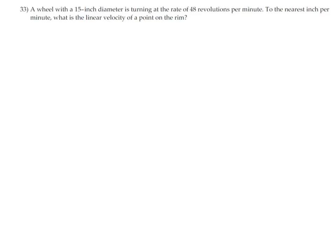A wheel with a 15-inch diameter is turning at the rate of 48 revolutions per minute. To the nearest inch per minute, what is the linear velocity of a point on the rim? In this problem we are converting revolutions per minute to inches per minute. We're going from angular velocity, revolutions per minute, to linear velocity, inches per minute.